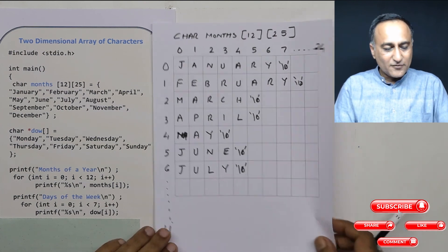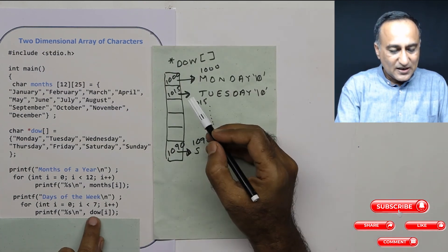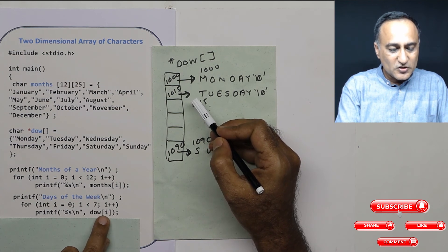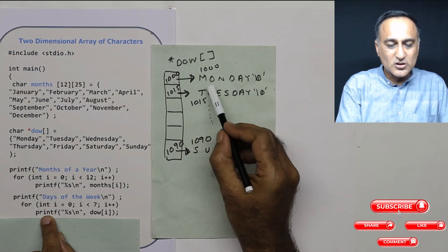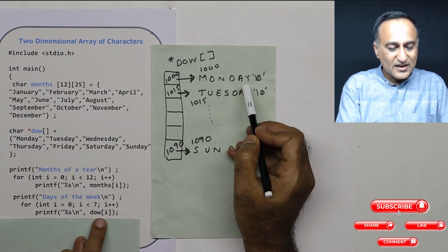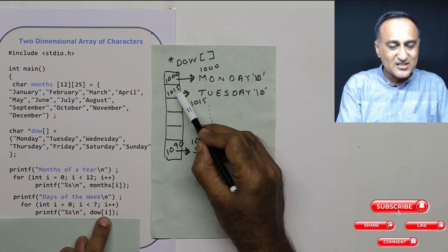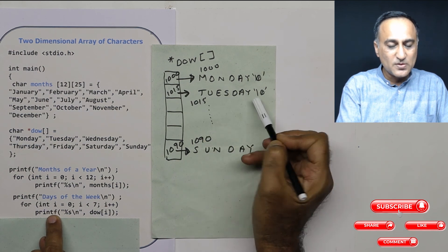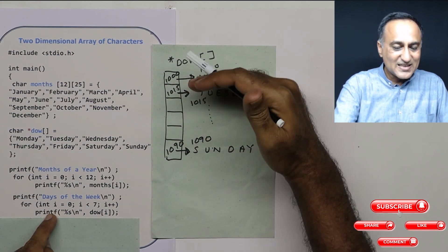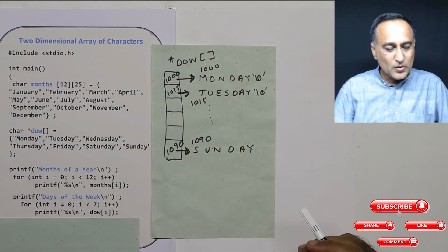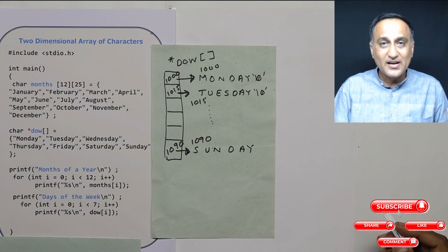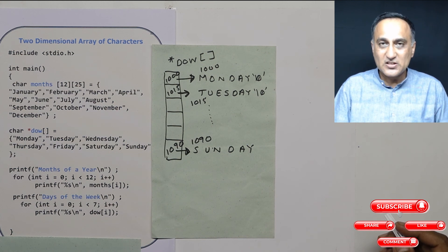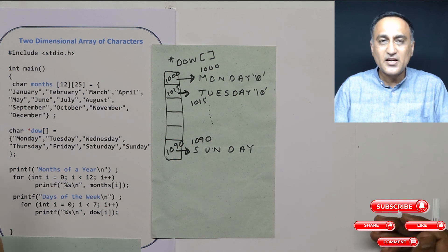When printing the days of the week using the array of pointers, dow[0] when i is 0 contains address 1000, so the address 1000 is sent to printf and Monday is printed. When i becomes 1, dow[1] contains address 1015, which is sent to printf and Tuesday is printed. This way, all addresses from Monday through Sunday are sent, and the days of the week are printed. It is essential to go back to the pointer videos to have a very clear understanding of pointers — that is the only way you will understand arrays of characters or strings accurately.